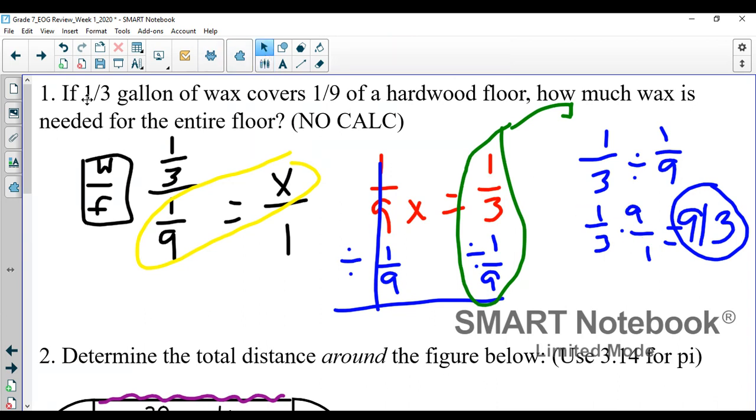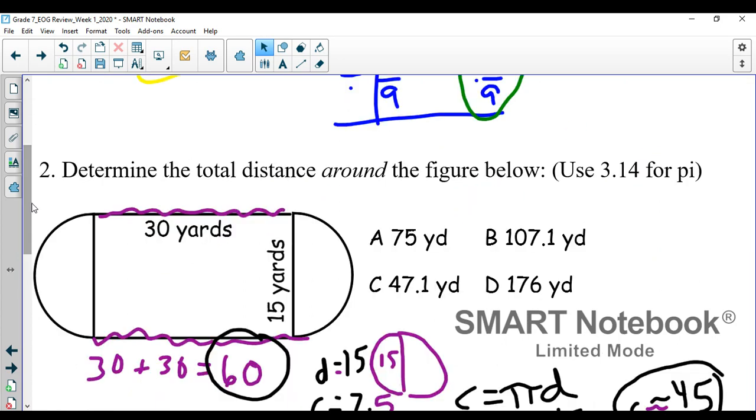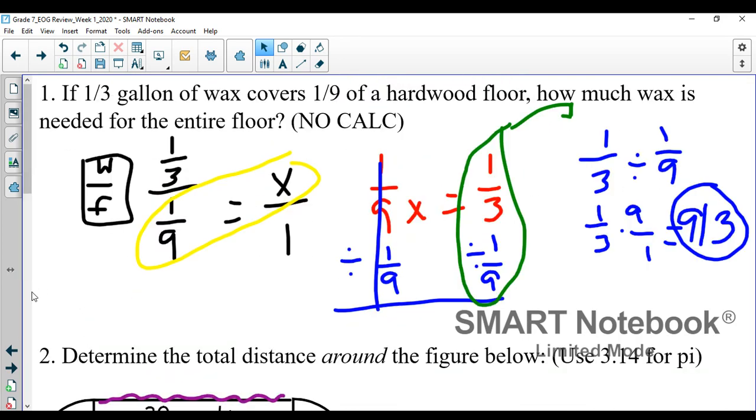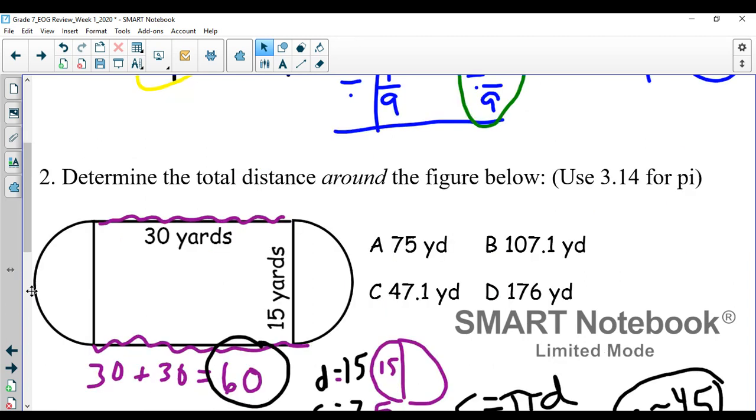Number two is a pretty tricky one. It says determine the total distance around the figure below, and what we have here is kind of like a track. On this track we have two straightaways and then two curved portions, so we need to figure out the distance around the entire thing. If I started here, how many yards would it take to go all the way around the outside? I kind of split this up into two problems.